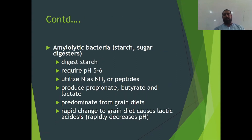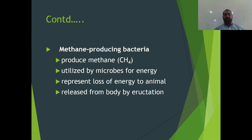Then there are amylolytic bacteria, which digest starch and sugars. They require a pH of 5 to 6 and also utilize nitrogen as ammonia or peptides. They also produce propionates, butyrates, and lactate. A rapid change to a grain diet causes lactic acidosis, which rapidly decreases pH and affects the colonies of the microorganisms. Then there are methane-producing bacteria — they produce methane, which is utilized by the microbes for energy, and the produced methane is released from the body by eructation or burping.